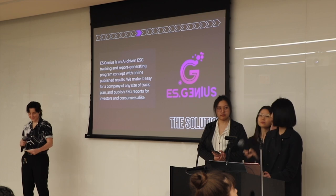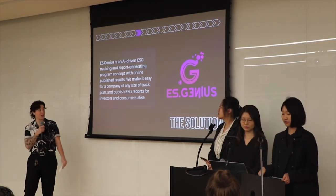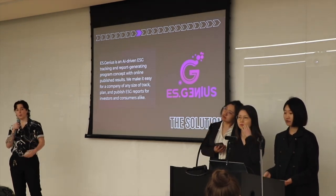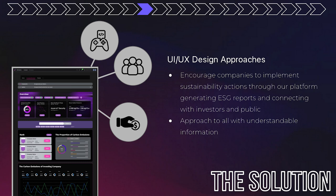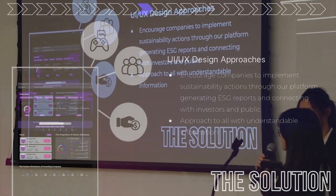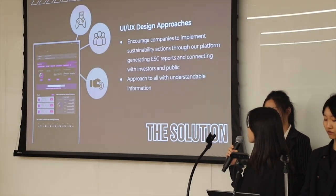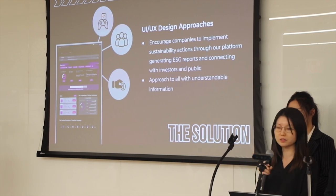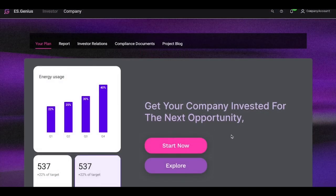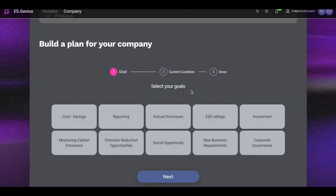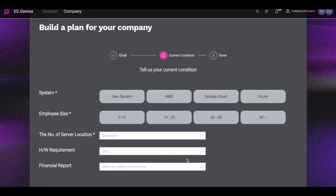Here is our solution. ESGenius is an AI-driven ESG tracking and reporting software concept with online published results and communication. We make it easy for a company to track, plan, and publish ESG reports for investors and consumers alike. When it comes to our design approach, we are aiming to encourage companies to implement sustainability action through our platform that enables generating ESG reports and connecting with investors and the public. We also aim to present all information in an understandable way. For the company as our customer, we will provide a process for customers to set up their sustainability goals in an easy way.